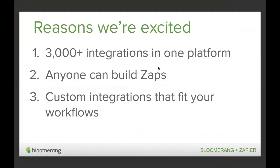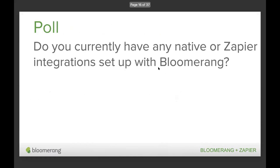There are three primary reasons why Zapier integrations can be so powerful. First and most importantly, Zapier connects to over 3,000 other apps — any app in Zapier's directory at zapier.com/apps can be integrated with Bloomerang. Second, anyone can build integrations — you don't need to know how to code to build Zaps or workflows. Third, Zapier enables truly custom integrations; you aren't limited to a one-size-fits-all workflow. You can build an integration that's perfect for your organization, and that flexibility is especially important because every organization's fundraising strategy and needs are different.